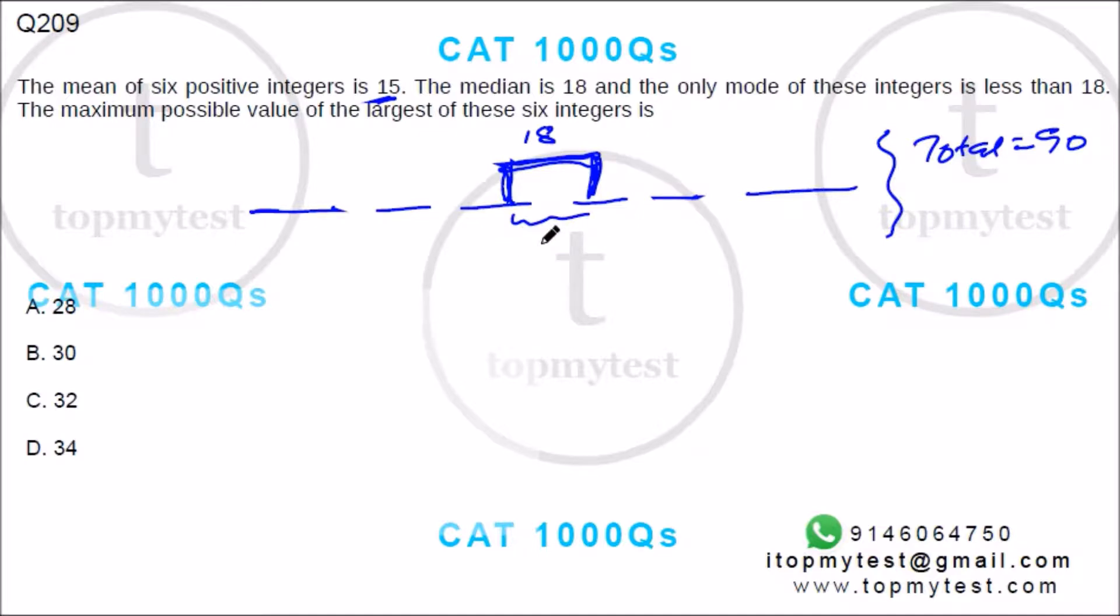The mode is less than 18. One scenario where the median is 18 is where both the middle numbers are 18. But it says the mode is less than 18. Which means the mode is either these two or these two or these three all together.